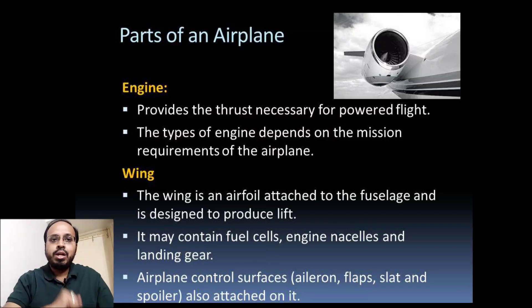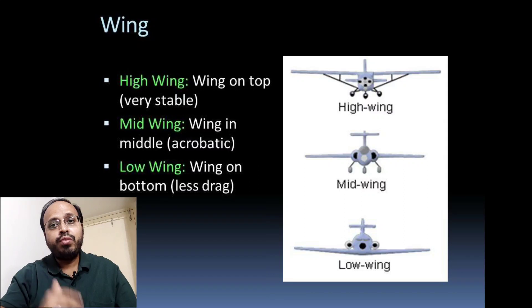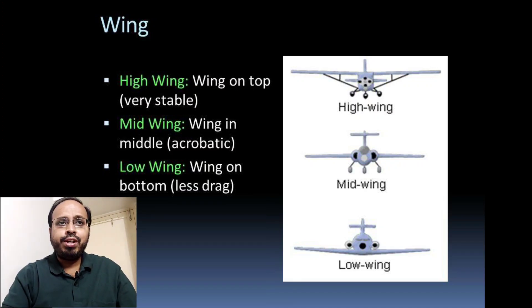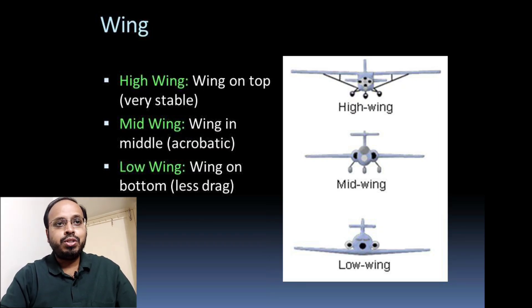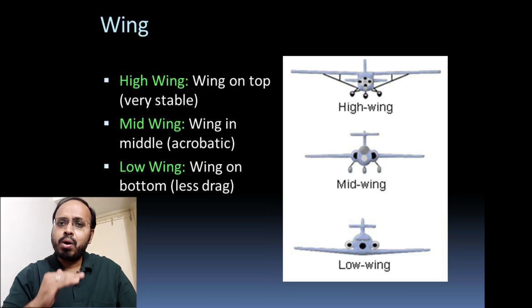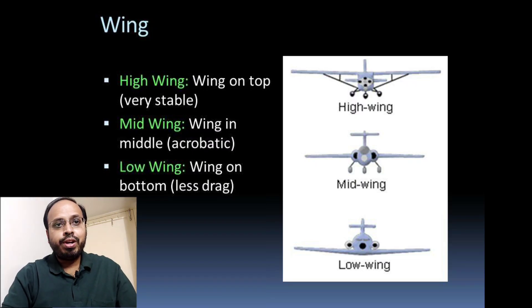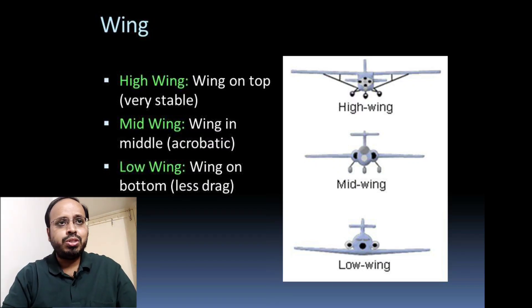In terms of wing configurations, there are different configurations available for different purposes: high wing, mid wing, and low wing. In the high wing configuration, the wing is mounted on the top of the fuselage — this is a very stable configuration. For mid wing, the wing is mounted at the middle section of the fuselage, which is especially good for aerobatics.